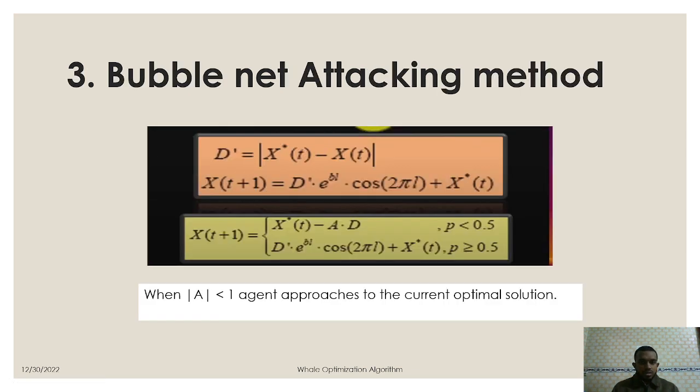Next we have to see the method for attacking. So that is why we will use this equation for attacking method. Here when the value of a is less than one, that means agent approaches to the optimal position. That means the agent is near to the optimal position.